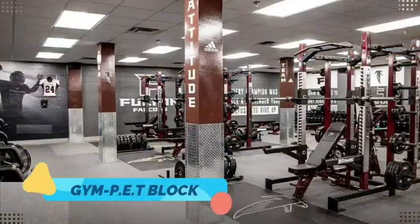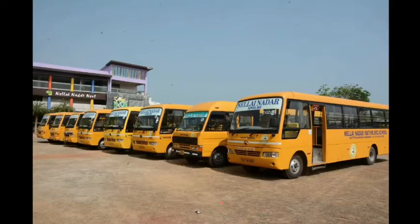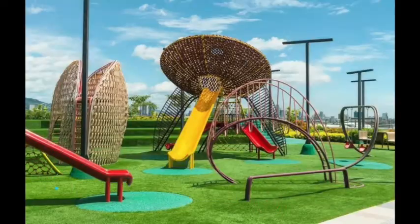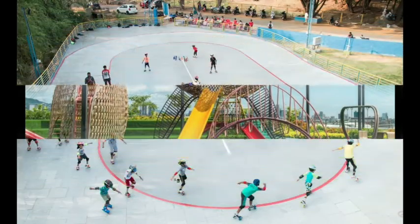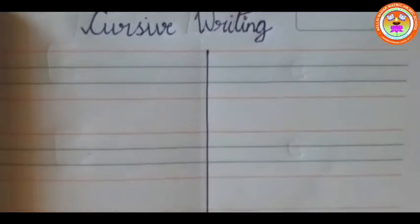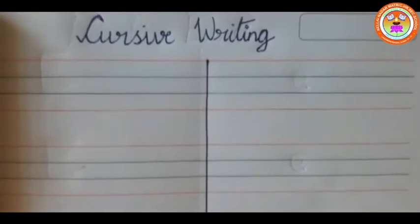This is a production of the U.S. Department of State. Today we are going to write the next two letters: Q and R.